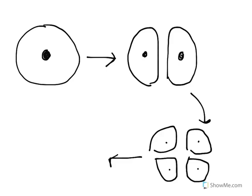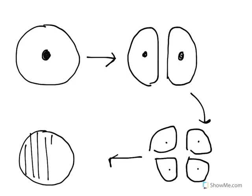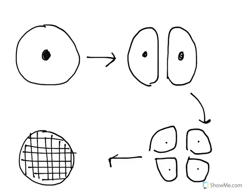Ultimately, at the end of cleavage, what you have is a solid ball of cells. That solid ball of cells is called a morula.